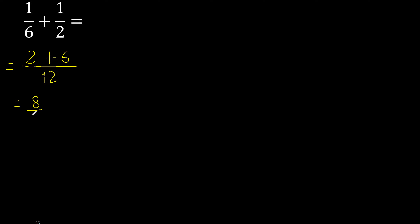12 and 8 can be simplified because they can be divided by the same number. Divided by 2: 8 divided by 2 is 4, 12 divided by 2 is 6.